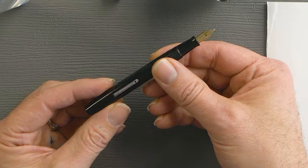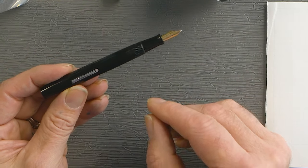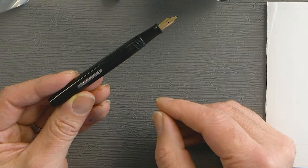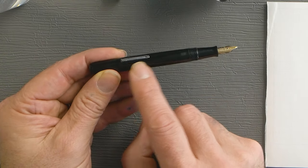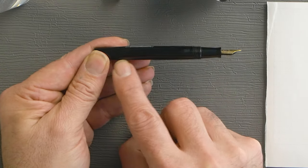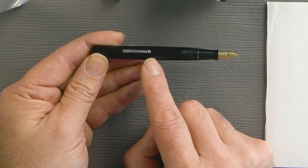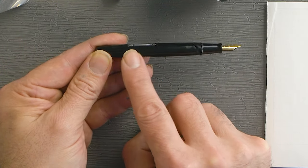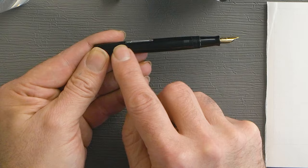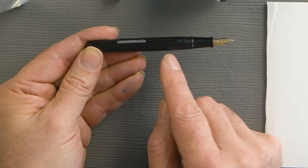And what we're going to do is we've got our bottle of Waterman Mysterious Blue here. And lever fillers operate under the system that there's a metal bar, what we call a J-bar in here. In this particular pen it's a little bit different, but for all intents and purposes, there's a metal bar that presses down on a latex sack.